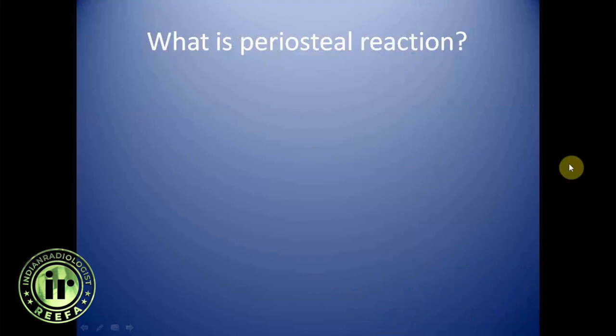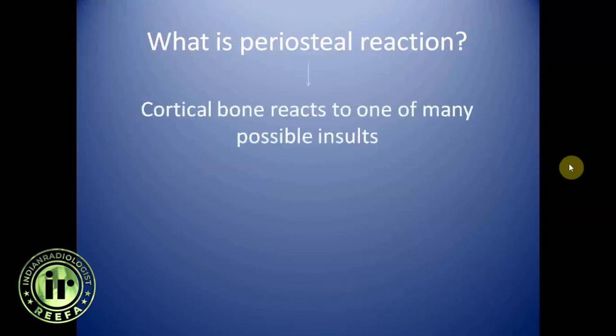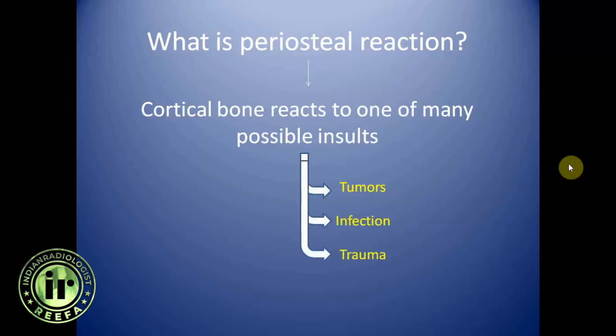What is periosteal reaction? It is a response of the cortical bone to many possible insults. That insult can be a tumor, an infection, a trauma such as a stress fracture, arthritis, or a metabolic cause. There are multiple causes which can lead to periosteal reaction.